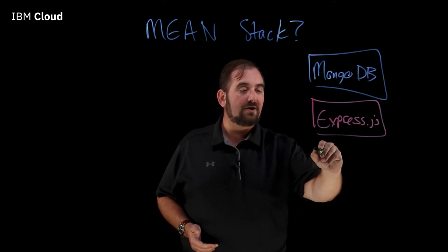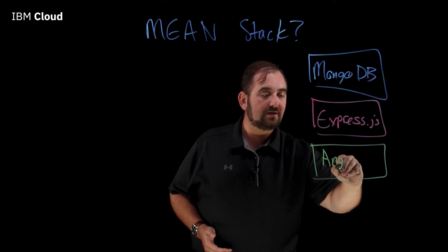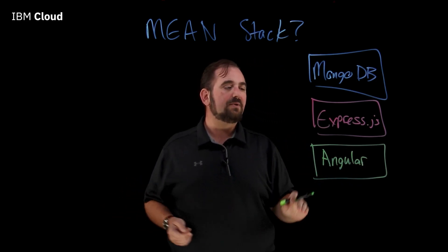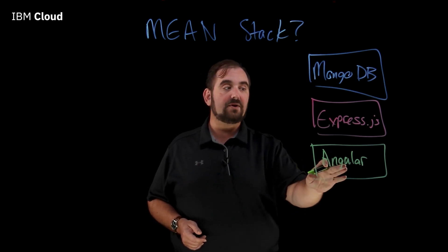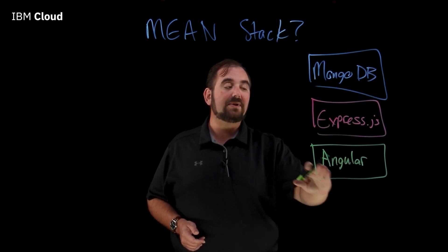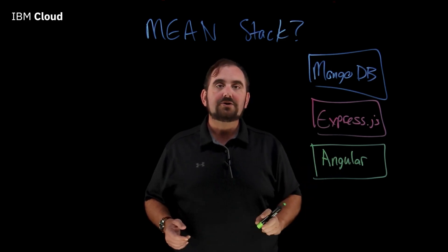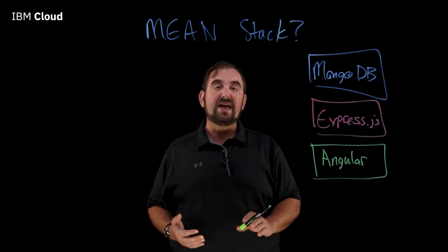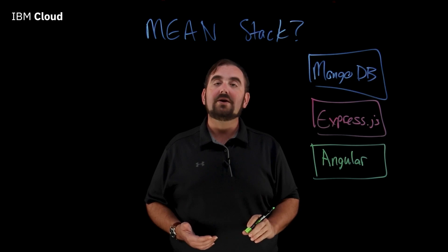The next layer is A. A in this case is Angular. Now, does it have to be Angular? It doesn't — it could also be React. But Angular or React are JavaScript-compatible frameworks. This is your application layer, your display layer, your interaction layer. So when somebody comes to your website or your web application, what they are interacting with and seeing is all done and displayed using Angular.